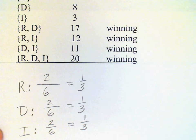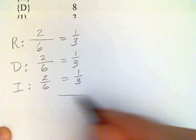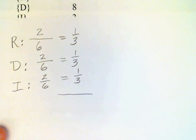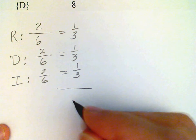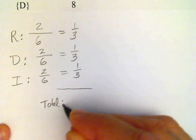Each of the voters has power index one-third according to this calculation. Notice that the sum of all the Banzhaf power indices comes to one, and that will always be the case.